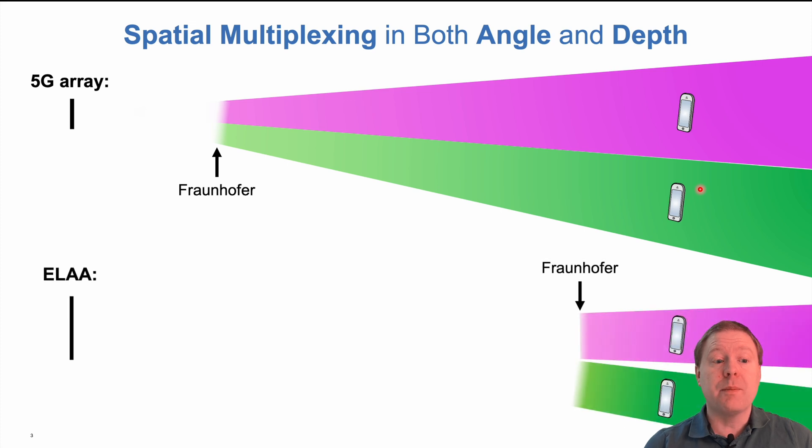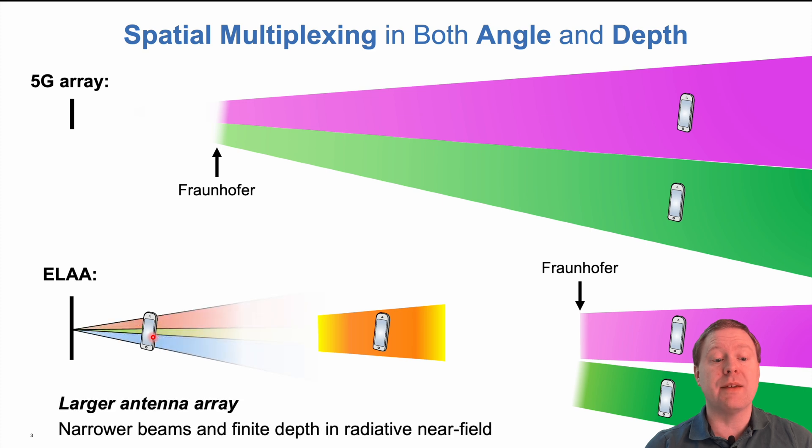But when we make the arrays bigger, the Fraunhofer distance moves further away. We can still serve users in the new far field, but we can also serve users at shorter distances. They might even be in the same angle but at different distances because the beams can have a finite depth. And if you're really close, the beam width becomes so narrow that it can even send multiple signals to the same user device. With larger antenna arrays, we get narrow beams and finite depth of the beams in the radiative near field.